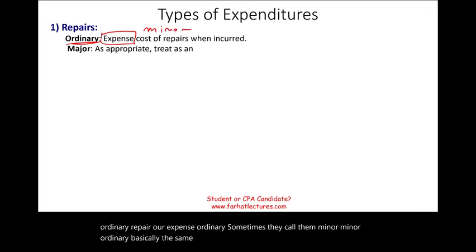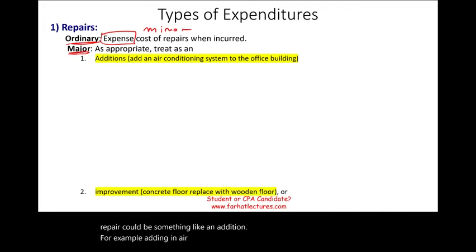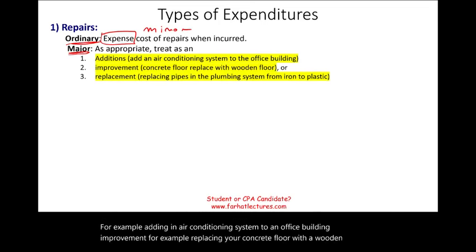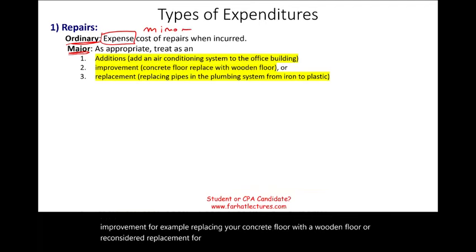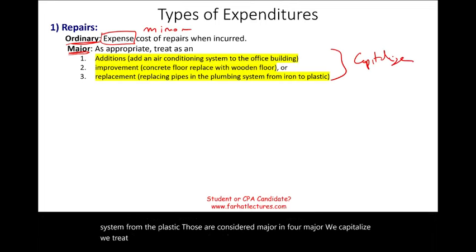If the repair is considered major — such as an addition like adding an air conditioning system to an office building, an improvement like replacing a concrete floor with a wooden floor, or a replacement like replacing iron pipes in a plumbing system with plastic — those are considered major, and for major repairs, we capitalize. We treat them as an asset.